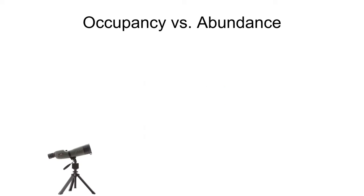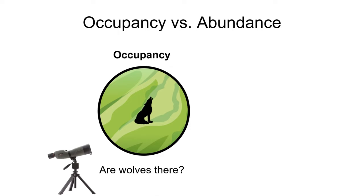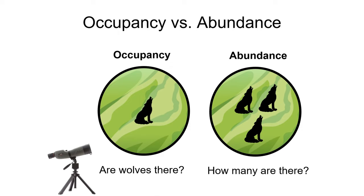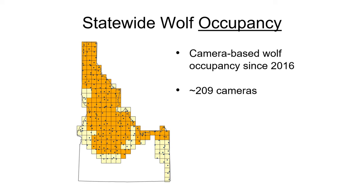Next I'll describe how we scaled up this method to generate a statewide estimate of wolf abundance, but first I want to clarify a couple of terms. We deployed two different camera grids across Idaho to estimate wolves — one to estimate wolf occupancy and the other to estimate wolf abundance. Occupancy is a measure of distribution, or how widespread wolves are on the landscape. Since 2016 we've deployed a grid of over 200 cameras per year to estimate wolf occupancy across suitable wolf habitat in the state. This occupancy grid divides most of the state into cells that are about the size of an average wolf pack territory.